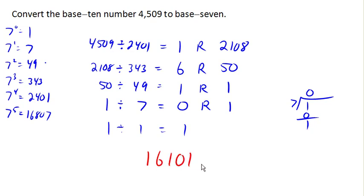So we got 1, 1, 0 7s, 1 49, 6, 343s, and 1, 2401.